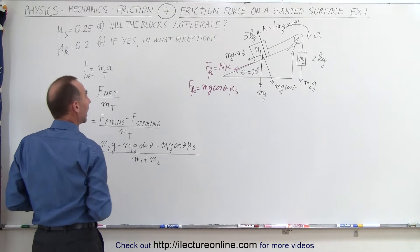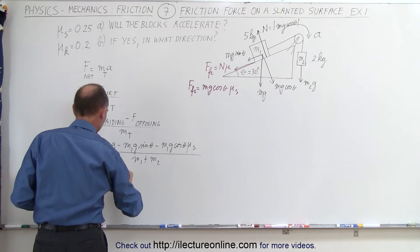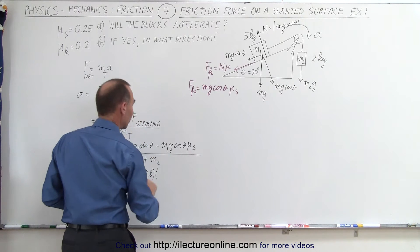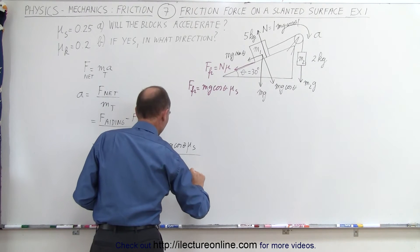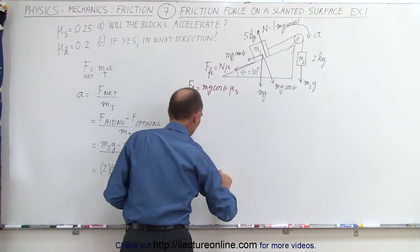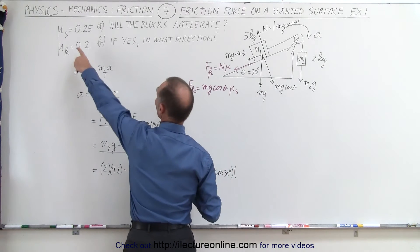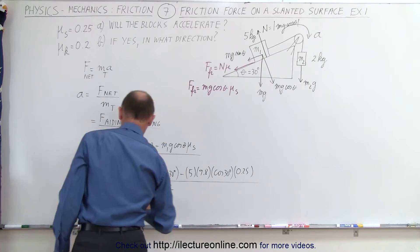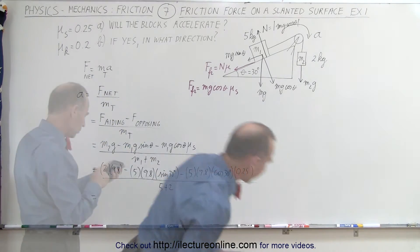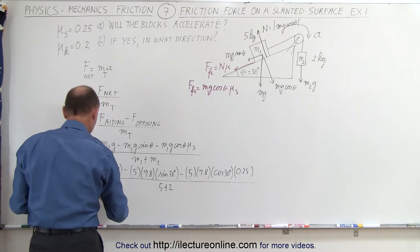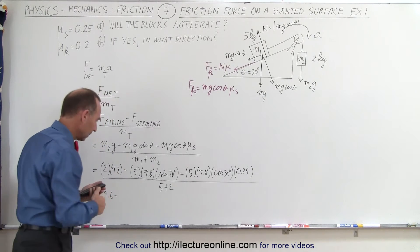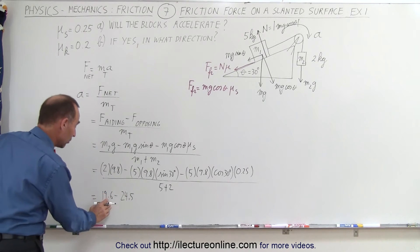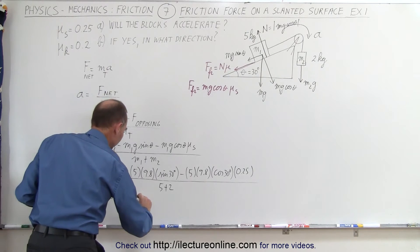Let's see what we get when we plug in the numbers. M2 is 2 kg times 9.8 m/s² minus M1, which is 5 kg times 9.8 times the sine of 30 degrees, minus M1 again: 5 times 9.8 times the cosine of 30 degrees times mu sub s which is 0.25, all divided by M1 plus M2 which is 5 plus 2. That gives us 19.6 minus 49 times sine of 30 — that's one half — so minus 24.5. I can already stop because at this point this value is larger, and I'm going to get a negative quantity.